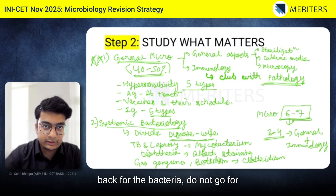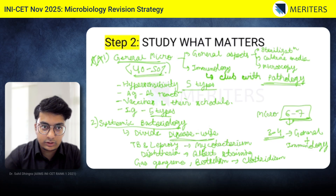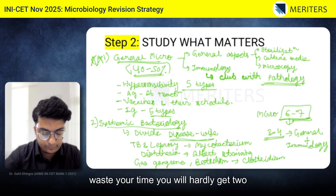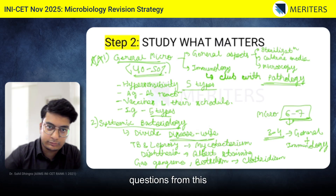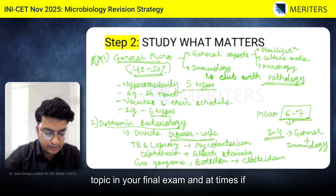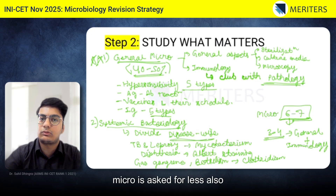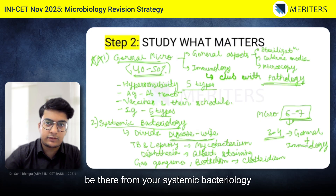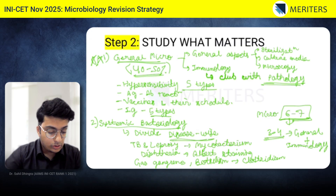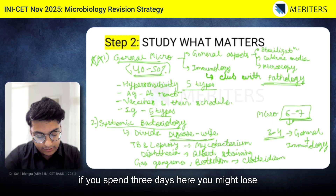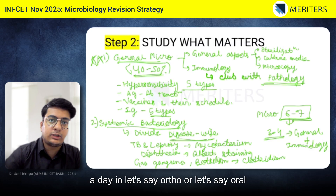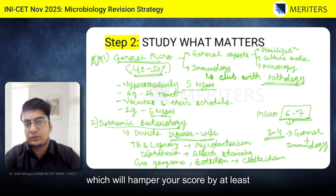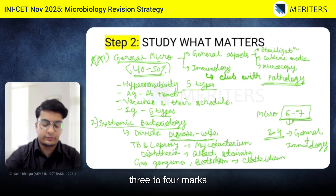For bacteriology, do not go for coverage of everything in detail for each bacteria because it will only waste your time. You will hardly get two questions from this topic in the final exam — sometimes only three or four questions total from micro, meaning hardly one from systematic bacteriology. If you spend three days here, you might lose a day on ortho or oral surgery, hampering your score by at least three to four marks.